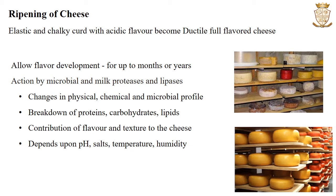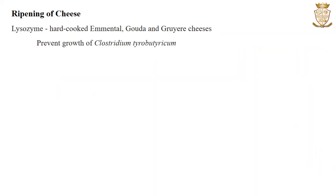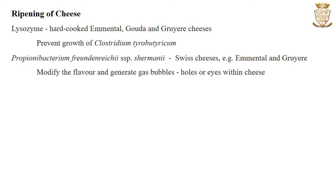In some cases, a high proportion of hydrophobic amino acid peptides will result in a bitter taste in the cheese. Some countries allow acceleration of flavour development through the addition of commercial enzyme preparations. Lysozyme may be added in the manufacture of hard-cooked Emmental, Gouda and Gruyère type cheeses to prevent the growth of spoilage organisms. Propionibacterium freudenreichii used for the production of Swiss-type cheeses — these bacteria modify the flavour and generate gas bubbles that result in holes or eye formation within the cheese.